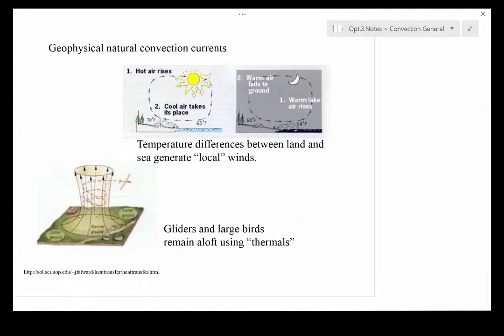Convection processes occur on all sorts of different length scales. Geophysical natural convection processes occur in planetary systems, in terrestrial systems. They're associated with temperature differences between land and sea that might generate some sort of local wind, or plumes that might occur because of local hotspots that induce thermals and allow birds and gliders to stay aloft.